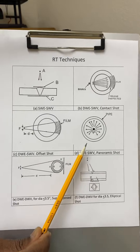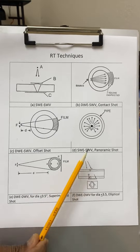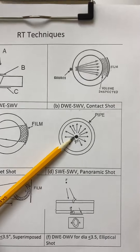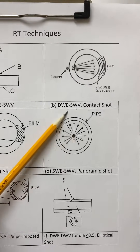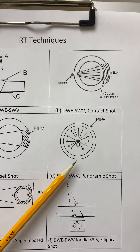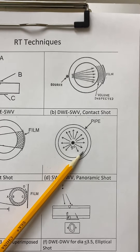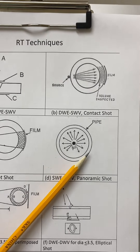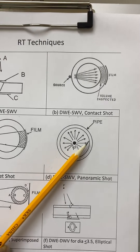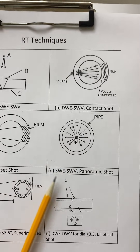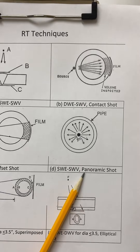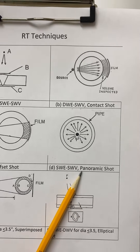The fourth technique is the panoramic shot, in which the source is placed in the center of the pipe and the film is placed on the outside. The radiation goes through a single wall and we are viewing a single wall thickness, so it is called single wall exposure single wall viewing — a panoramic shot.